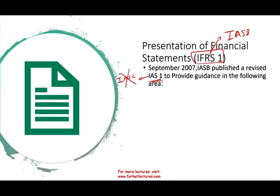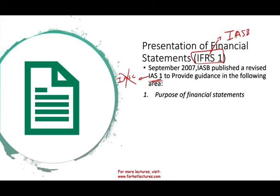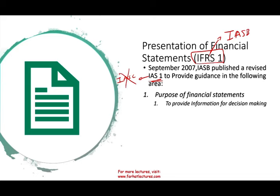IFRS 1 provides guidance in the following areas. First, it tells you the purpose of the financial statements — simply, to provide information for decision makers. Decision makers include creditors, investors, suppliers, government entities, and anyone who's interested in your information.